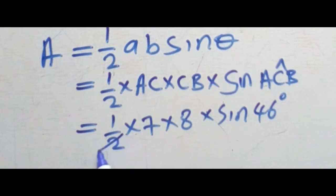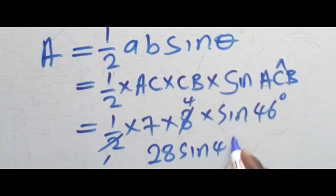From this point, this 2 into 2 is 1, 2 into 8 is 4. So you have 7 times 4 sine 46. This 7 times 4 will give you 28. So you have 28 sine 46 degrees.